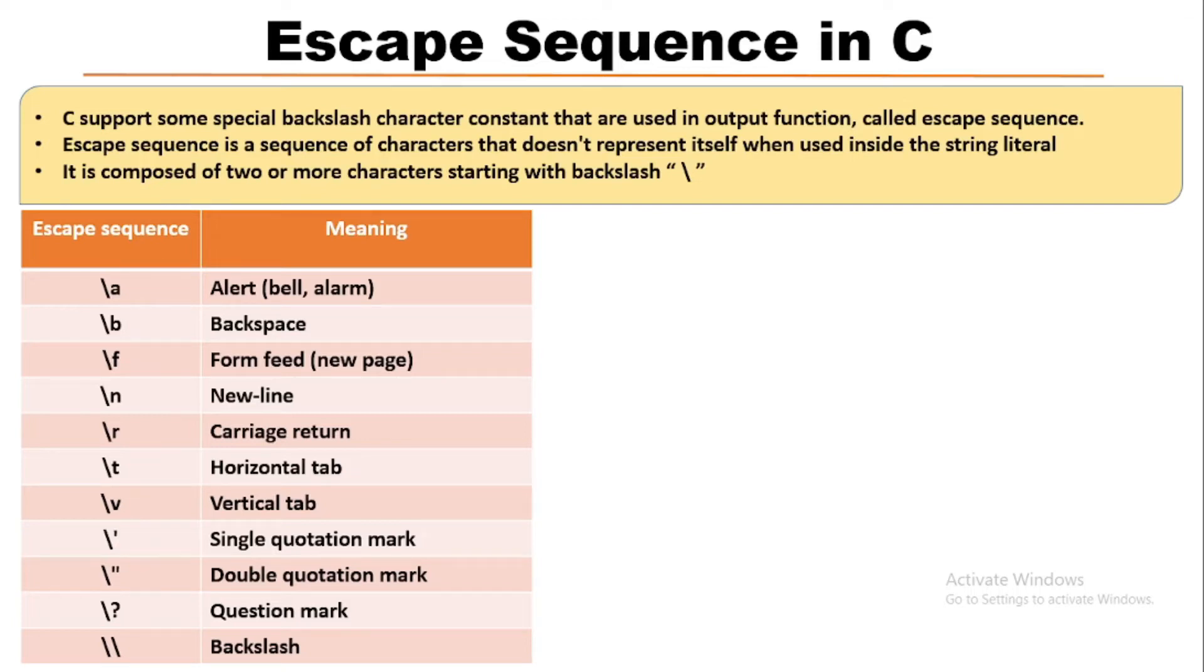Then backslash r, i.e., carriage return, which moves the cursor to the beginning of the current line. Next is backslash t, i.e., horizontal tab, which moves the cursor to the next horizontal tab position. Next is backslash v, i.e., vertical tab, which moves the cursor to the next vertical tab position. Then backslash single quote, backslash double quote, backslash question mark, and backslash backslash, which are used to represent themselves. Now we will understand this using a C program.